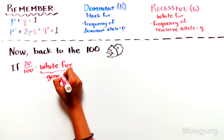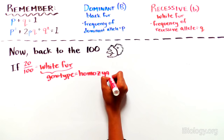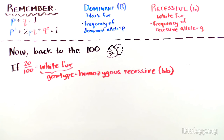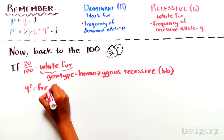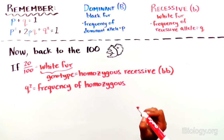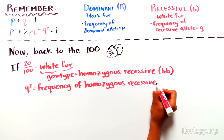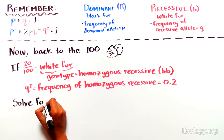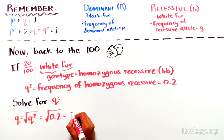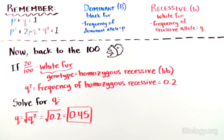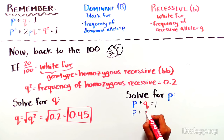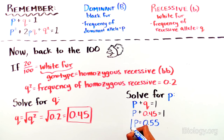The genotype frequencies relate to allele frequencies as follows: the probability of being homozygous dominant (BB) is P squared; the probability of being heterozygous (Bb) is 2PQ; and the probability of being homozygous recessive (bb) is Q squared. These sum to one: P² + 2PQ + Q² = 1. Since white fur is homozygous recessive, we know Q² = 0.2. Taking the square root gives Q = 0.45. Since P + Q = 1, P = 0.55.